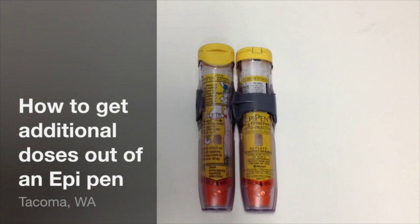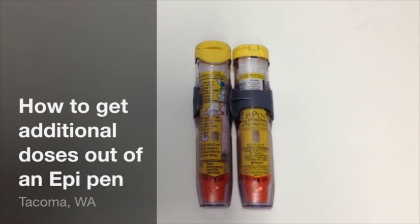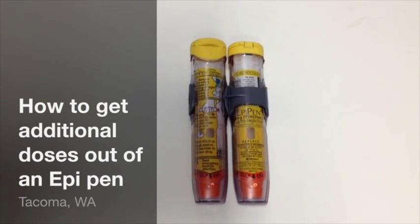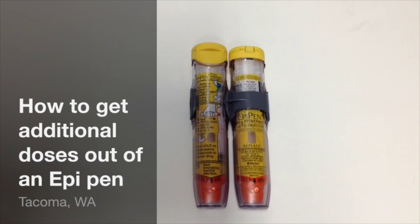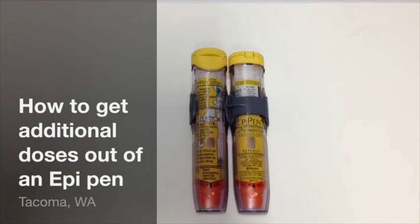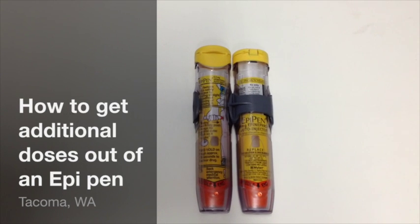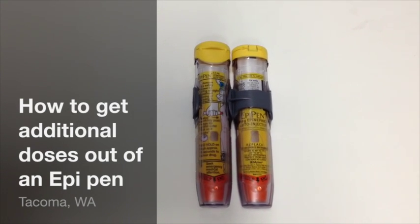So what we're going to show you here is how to open up the EpiPen and get further doses out. There are exactly 2 mLs or 2 milligrams of epinephrine in each EpiPen. So that's just a little over 6 doses.